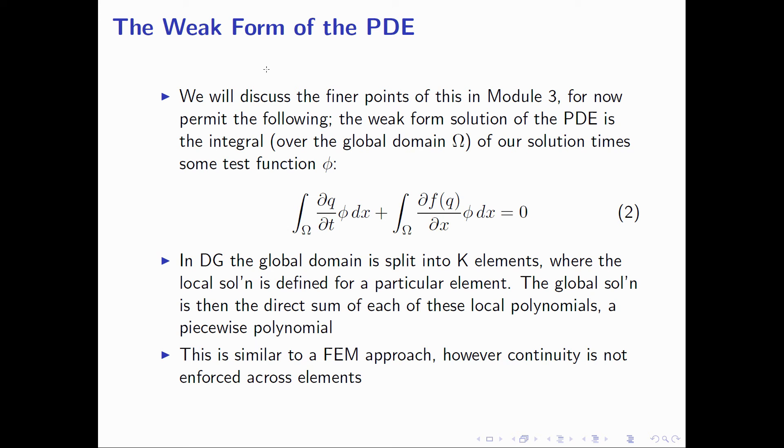We'll discuss the finer points of the weak form later in Module 3, but for now permit the following. We have a weak form solution of the PDE, which is an integral over our global domain omega of our solution times some test function. We haven't described what this test function is, nor why this particularly works. Like I said, we'll defer that to a later discussion. But for now, permit it.